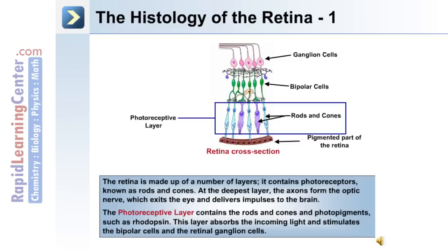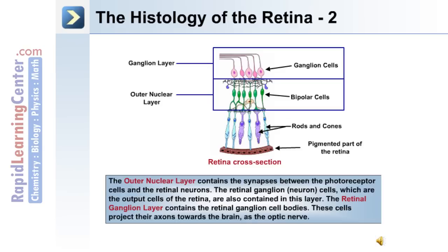The photoreceptive layer contains the rods and cones and photopigments such as rhodopsin. This layer absorbs incoming light and stimulates the bipolar cells and the retinal ganglion cells. The outer nuclear layer contains the synapses between photoreceptor cells and retinal neurons, and also contains the retinal ganglion cells, which are the output cells of the retina. The retinal ganglion layer contains the retinal ganglion cell bodies, and these cells project their axons towards the brain as the optic nerve.